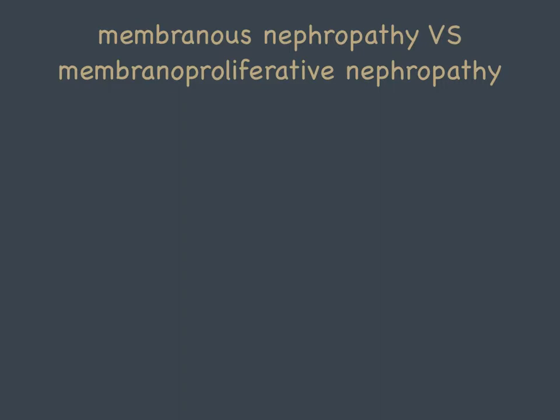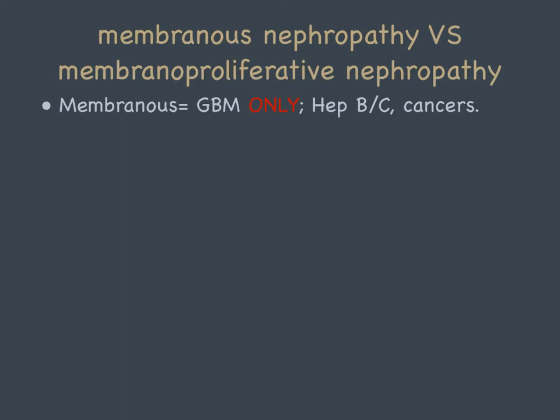Membranous nephropathy versus membranoproliferative nephropathy — membranous involves the glomerular basement membrane only. You have subepithelial deposits which cause a spike appearance on electron microscopy. It is strongly associated with hepatitis B and C, as well as malignancies such as lung and breast cancer, diseases like systemic lupus erythematosus, and infections like malaria.